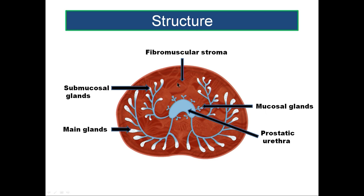This fibromuscular stroma has both sympathetic and somatic nerve supply. The contraction of these muscles helps in dilatation of the prostatic urethra and squeezing of the glands so that prostatic secretions are poured into the prostatic urethra. The glandular part is arranged in three forms: mucosal glands, which are simple ducts opening into the urethra all around; and submucosal glands, which are tubular glands with a little branching, opening into the prostatic urethra at the level of the seminal colliculus.